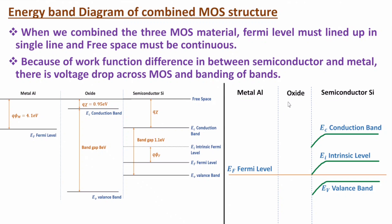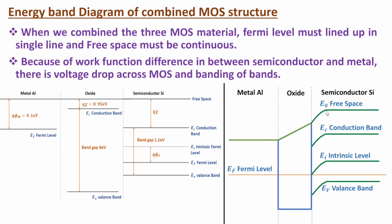For the oxide layer energy band diagram, there will be a ramp function. The reason is that across the oxide there is a uniform electric field, so voltage varies uniformly — with lower potential at the metal side and higher potential at the semiconductor side — producing a ramp. Also, as free space must be continuous, you can observe the free space is continuous across all three regions. That is the combined MOS structure energy band diagram.